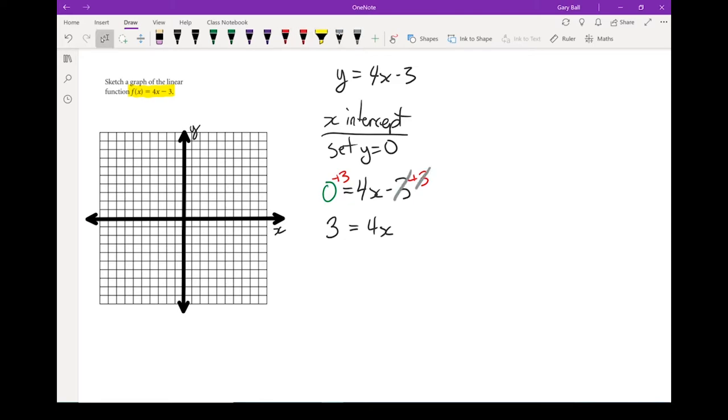Next step, I still want to get x all by itself. That 4 is multiplying in, opposite of multiplying is divide. So if I divide both sides by 4, I end up with x equals 3 quarters. Now don't get too hung up on the idea that your answer has to be a whole number. In real world, fractions happen, decimals happen. It's only in the perfect math world that things always equal a nice neat perfect number.